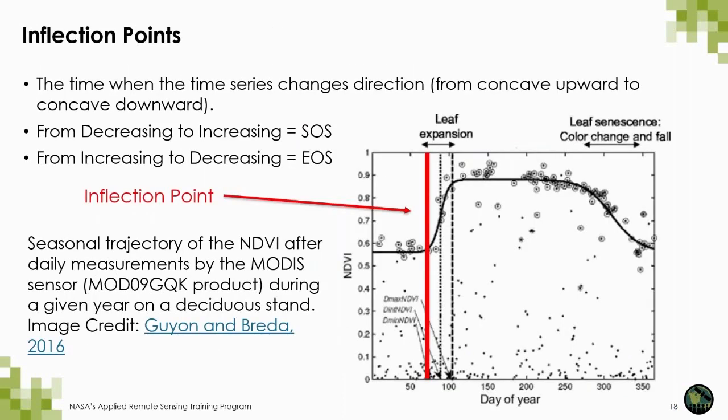Inflection points are commonly employed to identify SOS and EOS. This is the point where the time series changes direction. The inflection point corresponds with the start of the leaf expansion. When the curve goes from decreasing or unchanging to increasing, this is where SOS is marked. When the curve goes from increasing to decreasing, this is when the EOS is identified. The inflection point method was employed in one of our four subsequent case study examples.